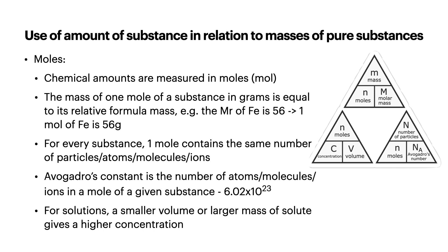Now we're going to move on to looking at moles. Chemical amounts are measured in moles — the unit being mol. The mass of one mole of a substance in grams is equal to its relative formula mass. For example, the MR of iron is 56, which means that one mole of iron is 56 grams. For every substance, one mole contains the same number of particles — atoms, molecules, ions.